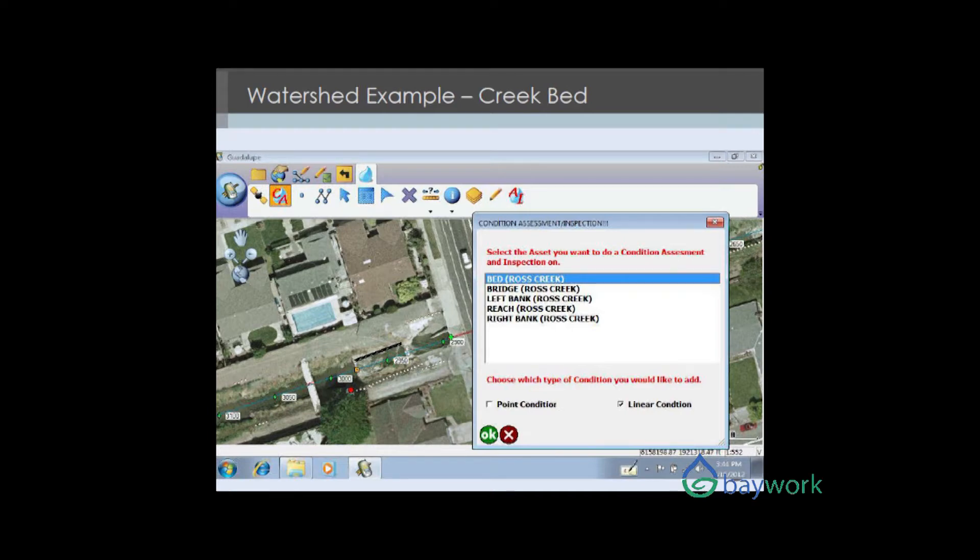Everything within 150 feet will show up. There's the bed of the creek, there's a bridge, there's the left bank, right bank, which are separate assets. If you had a weir or other stuff, all those would pop up here. You select which asset you want to do a condition assessment on from this list, and then you proceed.